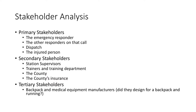Now let's look at the other stakeholders in our scenario. We have primary stakeholders such as the first responders themselves, other responders on the call, the injured person, and dispatch personnel — all immediately impacted by responders possibly being injured. We also have secondary stakeholders such as supervisors, trainers and the training department, the firefighting county agency, and the county's insurance. Finally, we have tertiary stakeholders such as the makers of the backpacks, who need to examine whether their equipment is actually designed to be run with and whether something in their design is causing the problem.